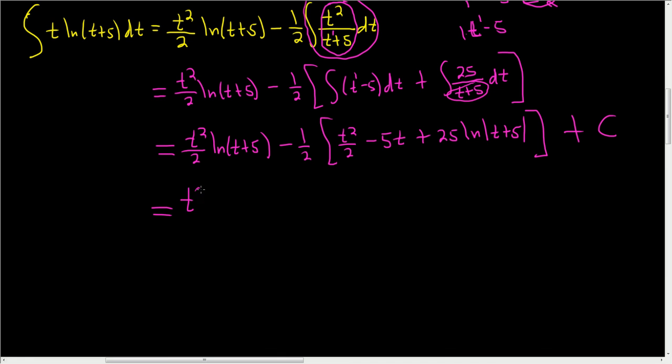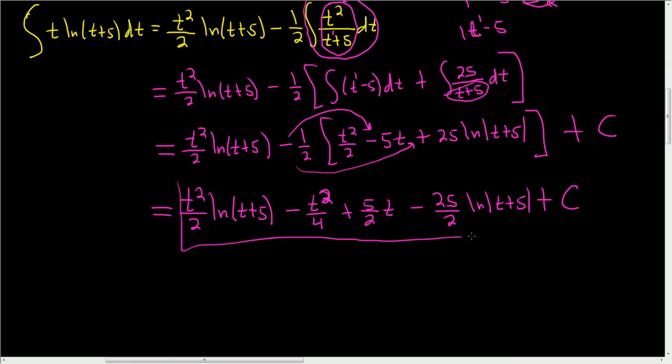This is equal to t squared over 2, the natural log of t plus 5, and then minus, let's see, 2 times 2 is 4, so t squared over 4, and then plus, right, we get a plus here, 5 halves t, and then, again, we get a minus this time, so minus 25 over 2 natural log absolute value t plus 5 plus c. Wow, that was a mess. So that was a lot harder and messier than I expected, but hopefully it made some sense.